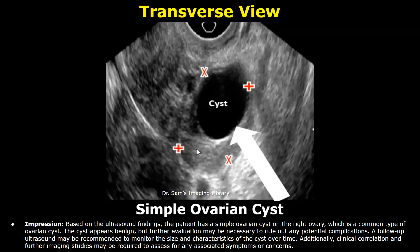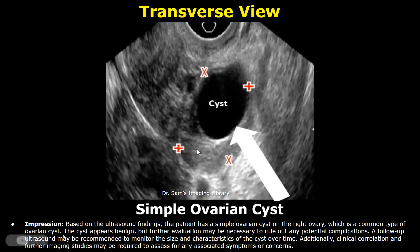In the impression, you can write: based on the ultrasound findings, the patient has a simple ovarian cyst in the right ovary, which is a common type of ovarian cyst. Then you can write about further evaluation and mention that a follow-up ultrasound may be recommended to monitor the size and characteristics of the cyst over time. You must also write about clinical correlation, as the diagnosis is not completely done on ultrasound alone.